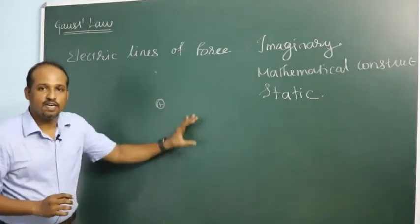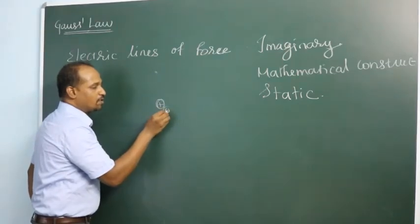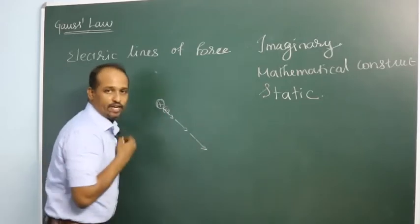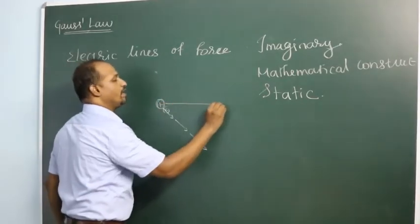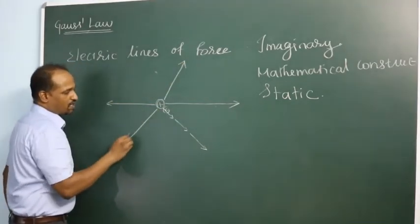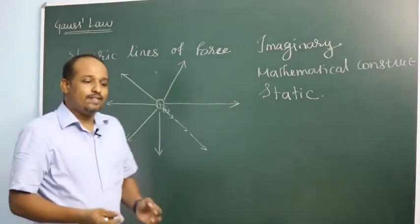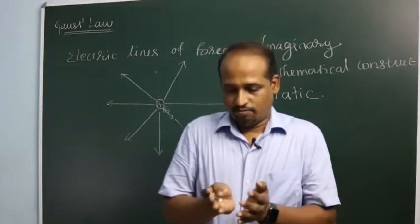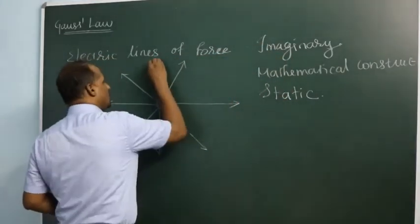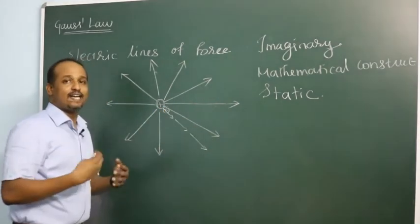If there is a charge, surrounding this charge will be a field. To visualize it, you place a unit positive charge nearby. This positive and positive will repel, and it will keep on repelling, going away radially. So from a positive charge, lines of force are radially outward — it is the path of the positive charge from a positive charge.